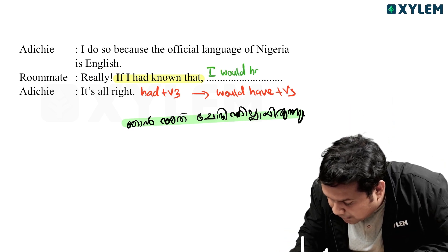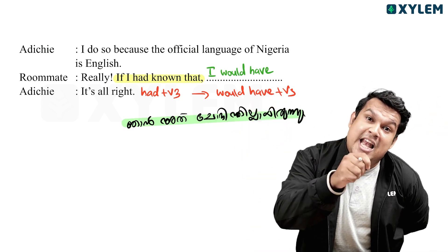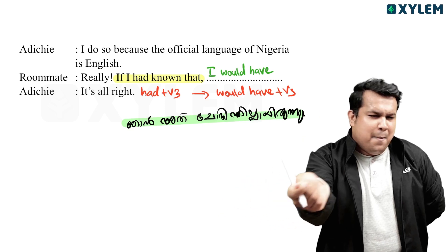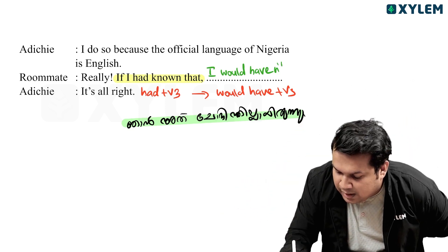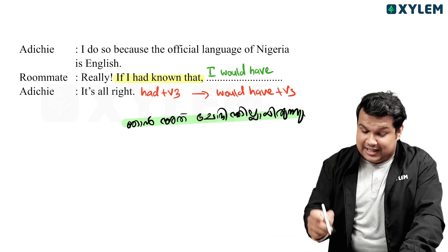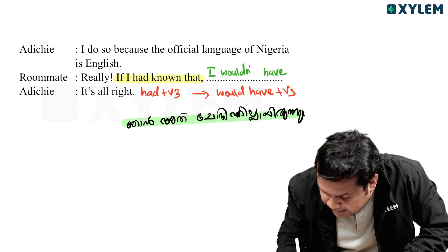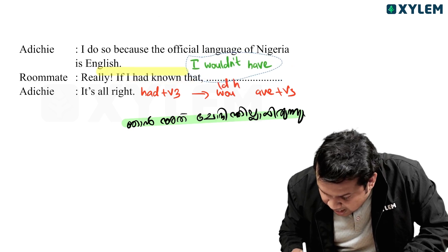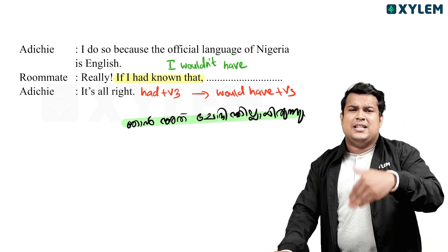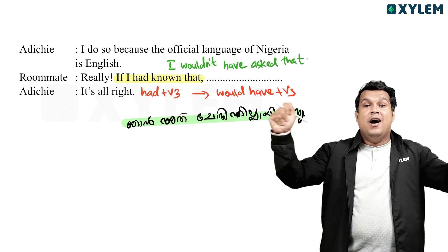The key point is that 'would have' is constant in the third conditional main clause. So the answer becomes: 'I wouldn't have asked that.' I explain this logic to you: if the if-clause has had plus V3, the main clause will always use would have plus V3.